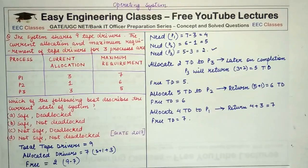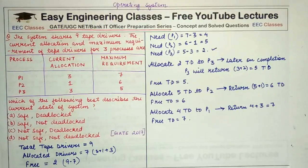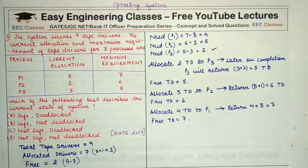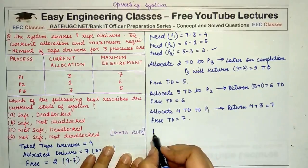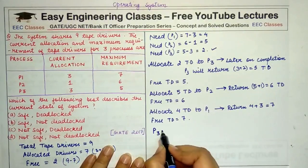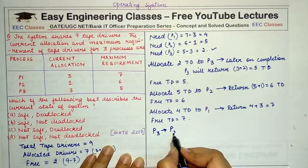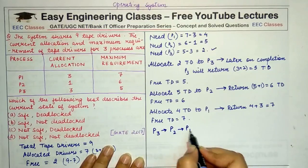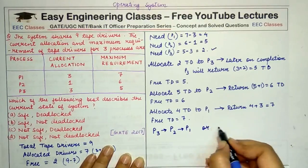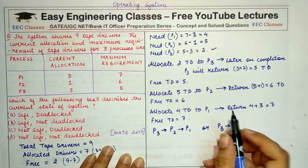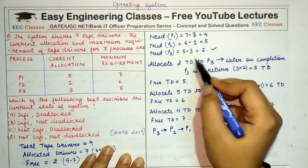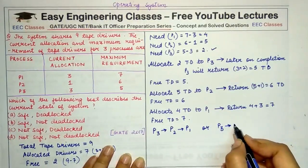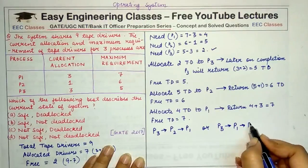So this was a sequence in which all the 3 processes got their required number of tape drivers and they completed their execution. So what was the sequence that was followed? I followed the sequence P3, P2 and P1. You could have also chosen the sequence where P3 would come at the beginning because it requires two tape drivers that were initially free. Then you can choose P1 before P2.